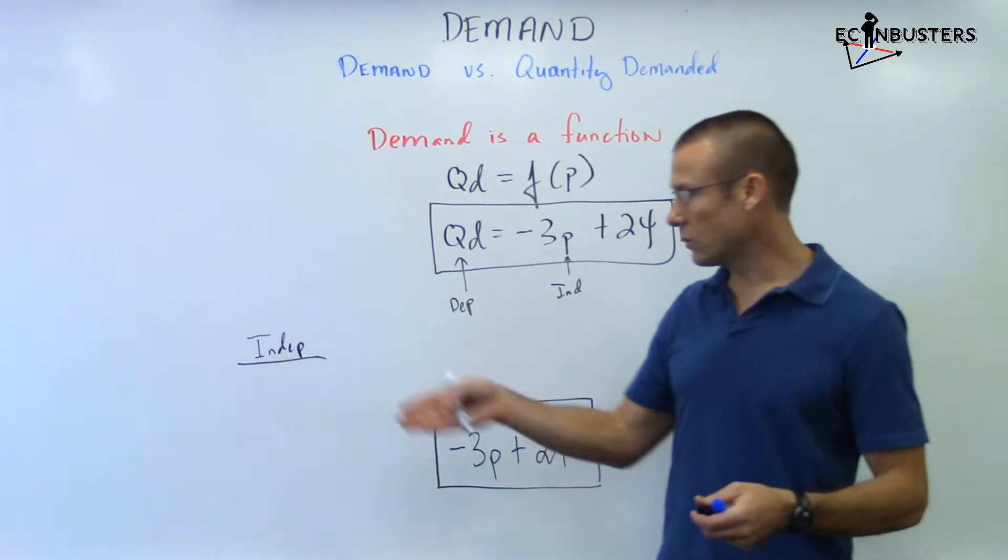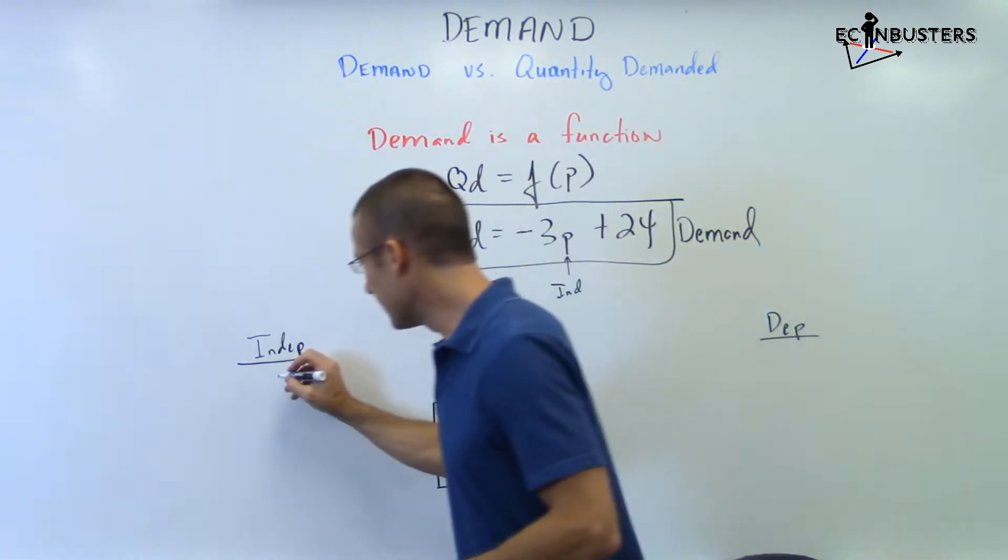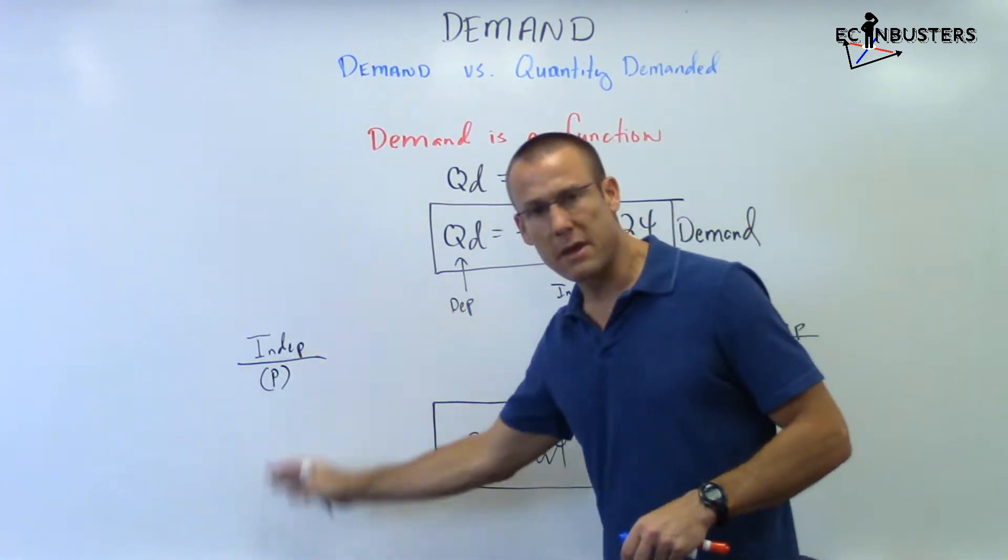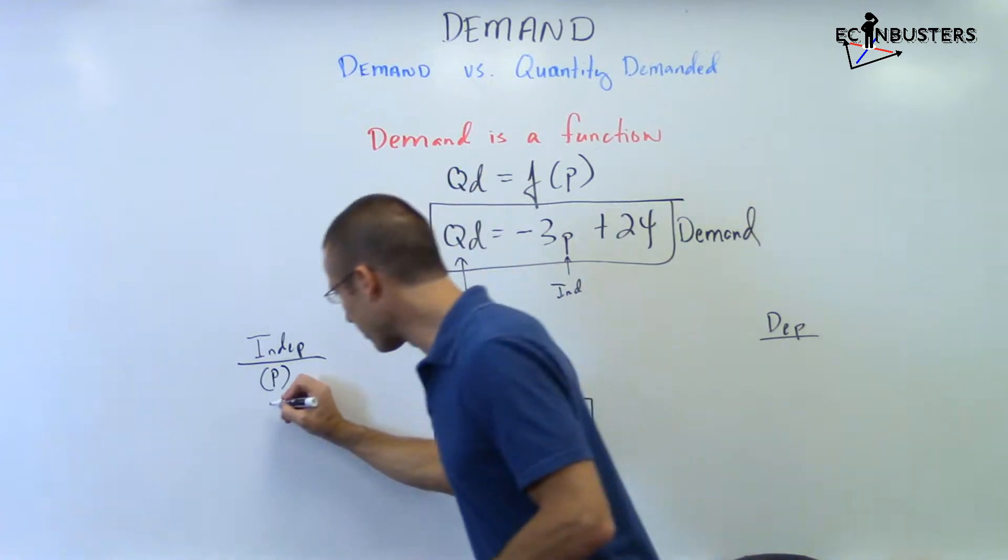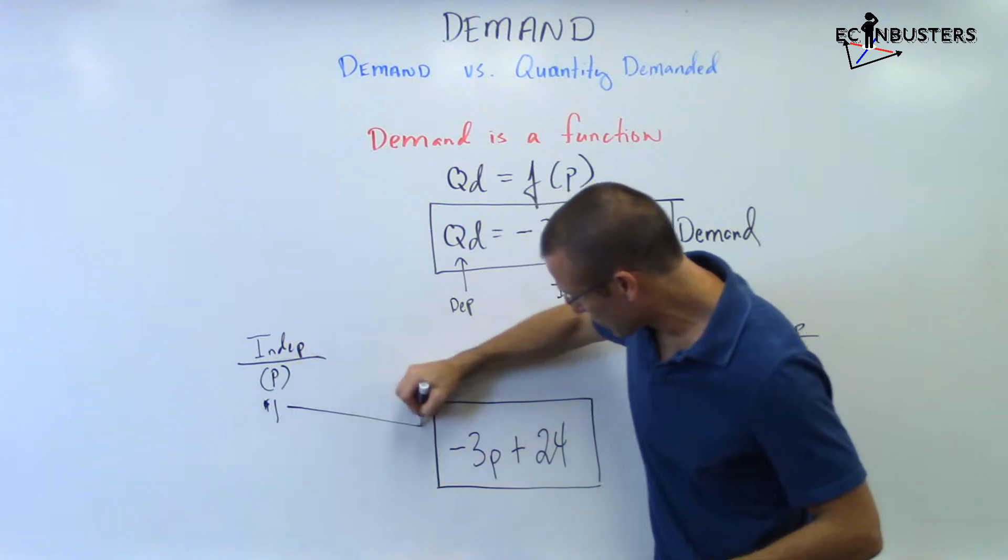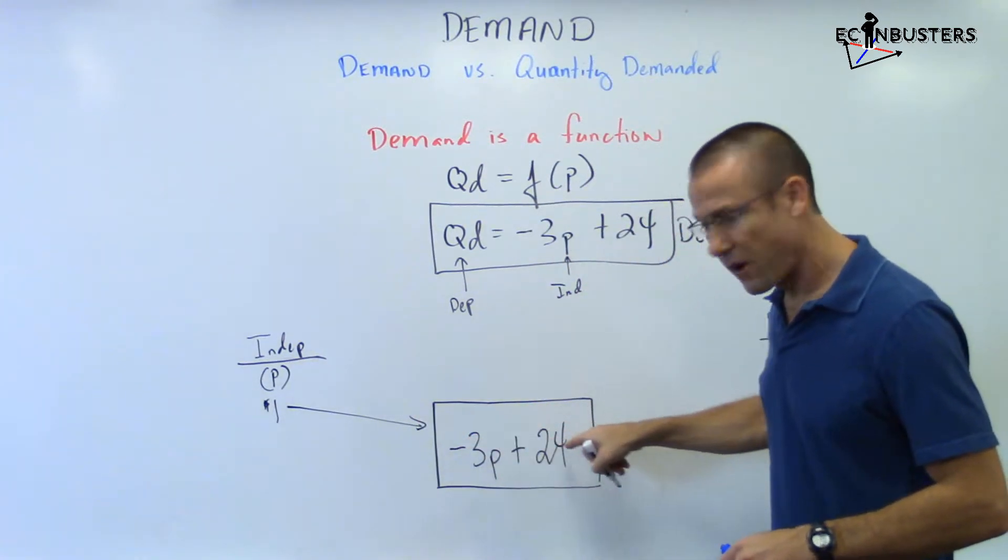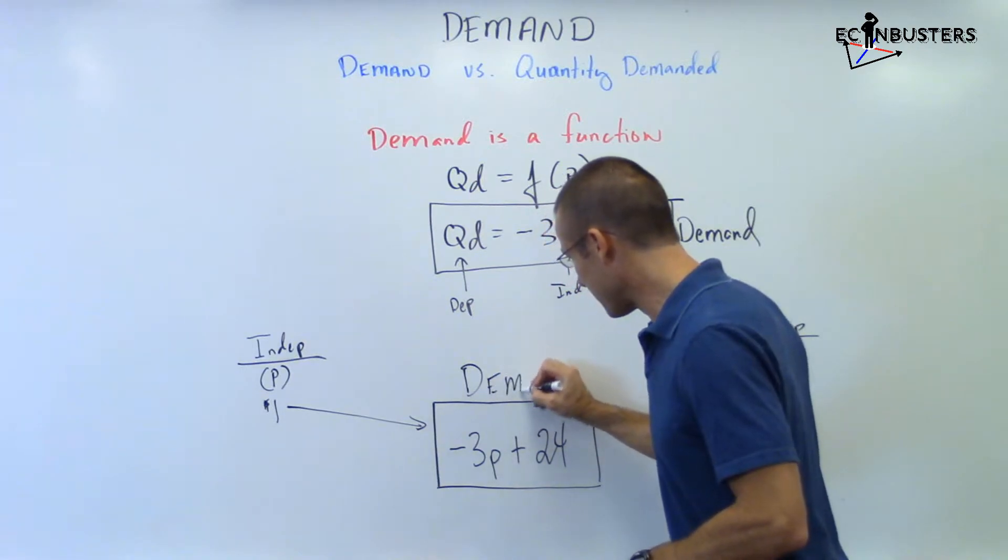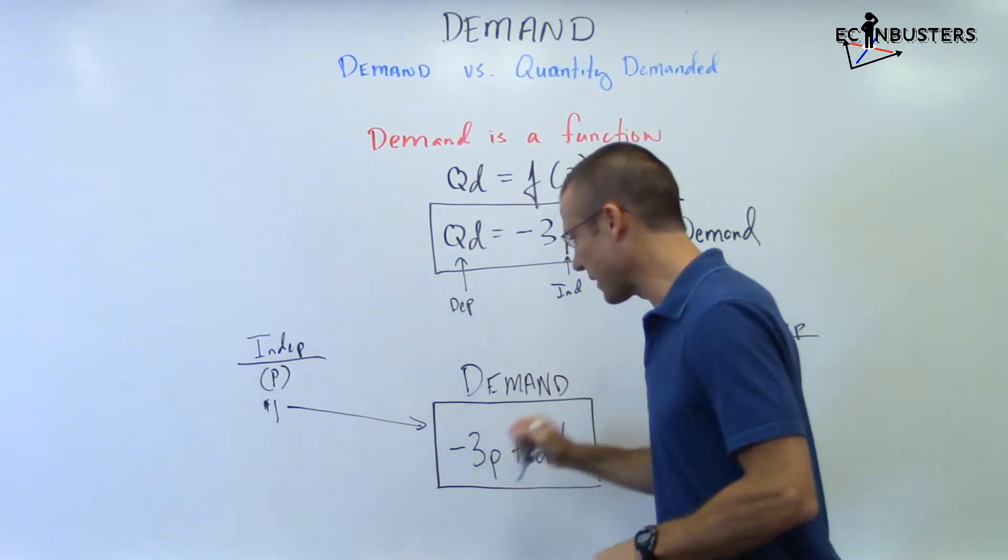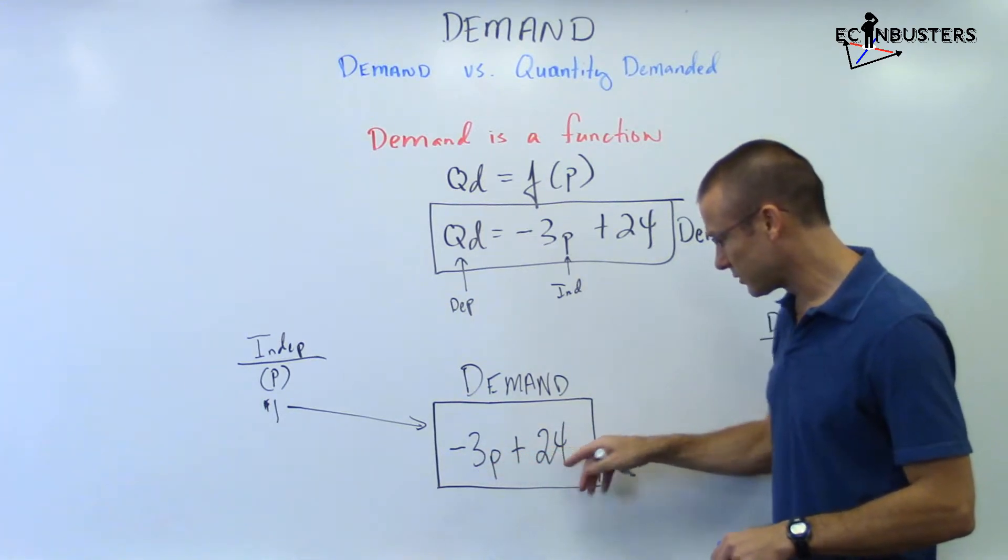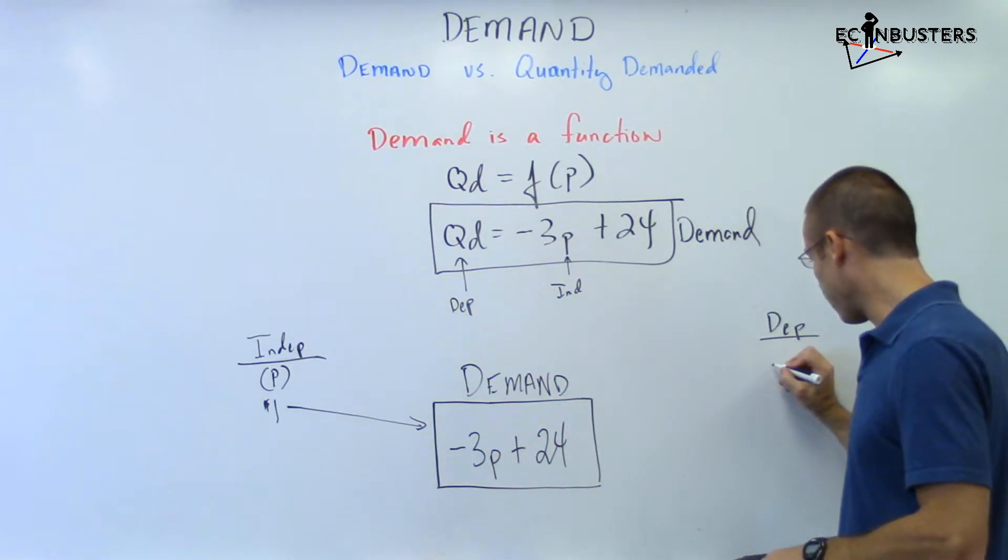So what we can do independent variable, what is it again? It's the price. The price is the independent variable. We can just make up different prices. Let's go with a price of $1. Price of $1. Put that into the machinery of the function. What is the function? The function is demand. This thing is demand. $1 goes in. We got negative three plus 24. We get 21.